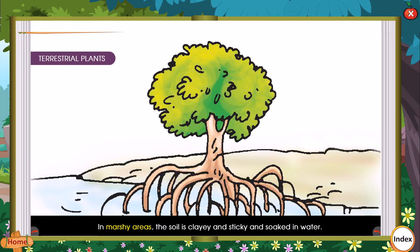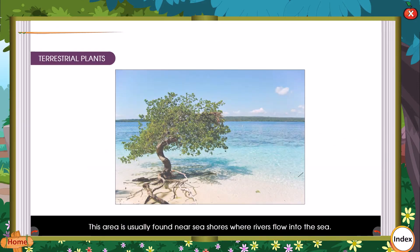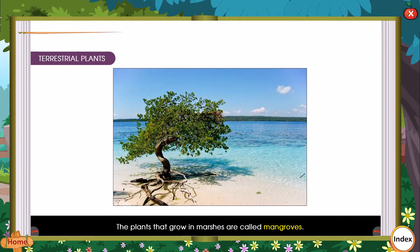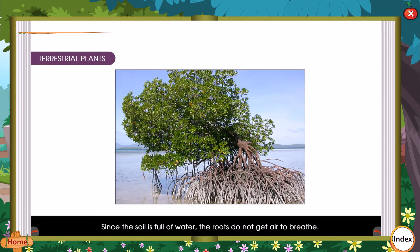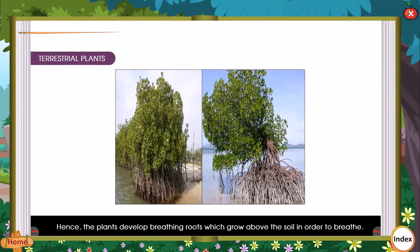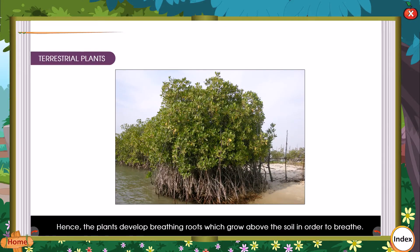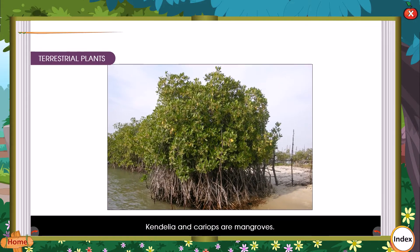In marshy areas, the soil is clayey, sticky, and soaked in water. This area is usually found near the seashore where a river flows into the sea. The plants that grow in marshes are called mangroves. Since the soil is full of water, the roots do not get air to breathe. Hence, the plants develop breathing roots which grow above the soil in order to breathe. Candela and ceriops are mangroves.